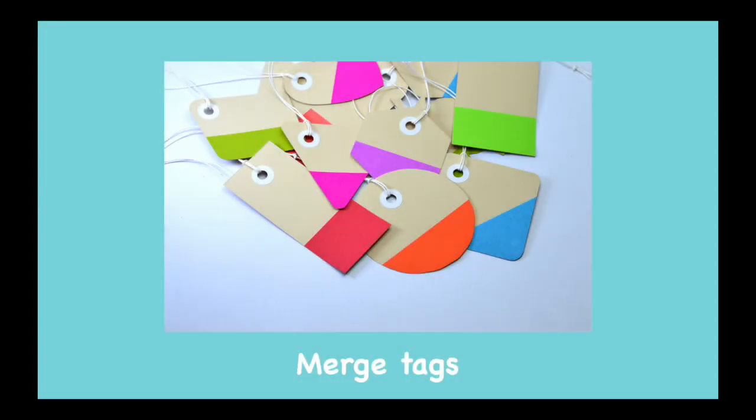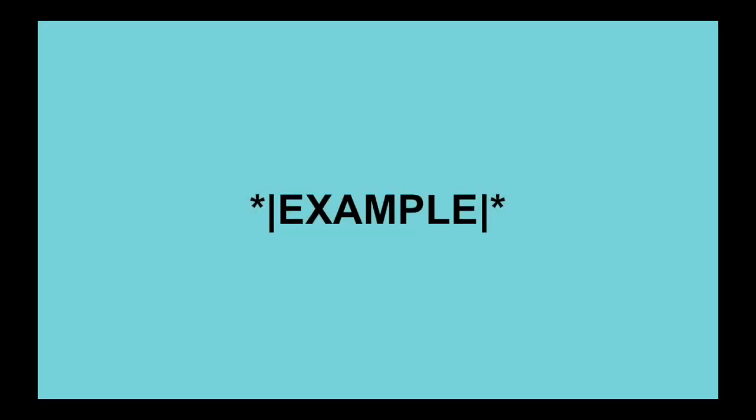MailChimp offers merge tags for all kinds of dynamic information. You can simply paste a merge tag into your email campaign to add personalized or dynamic content. Your MailChimp audience contains audience fields that refer to your contacts' information. Each audience field corresponds to a unique merge tag, which looks like a snippet of text wrapped in special characters — you type a star, then a vertical bar, then the tag, then another vertical bar, and then another star.